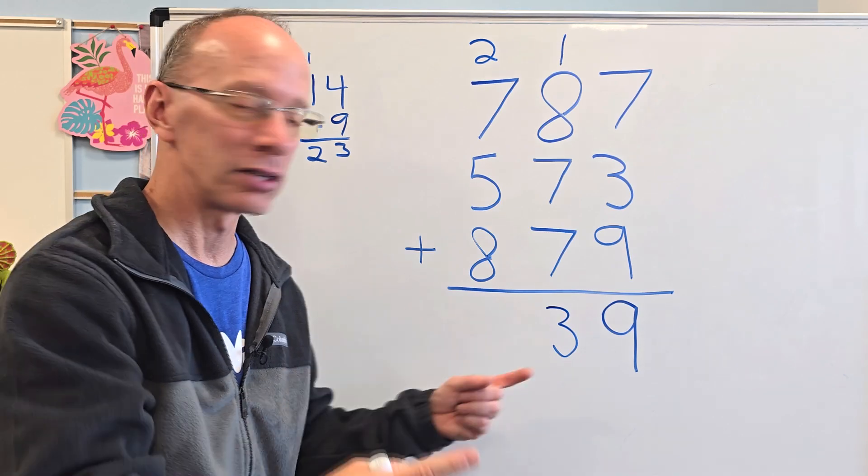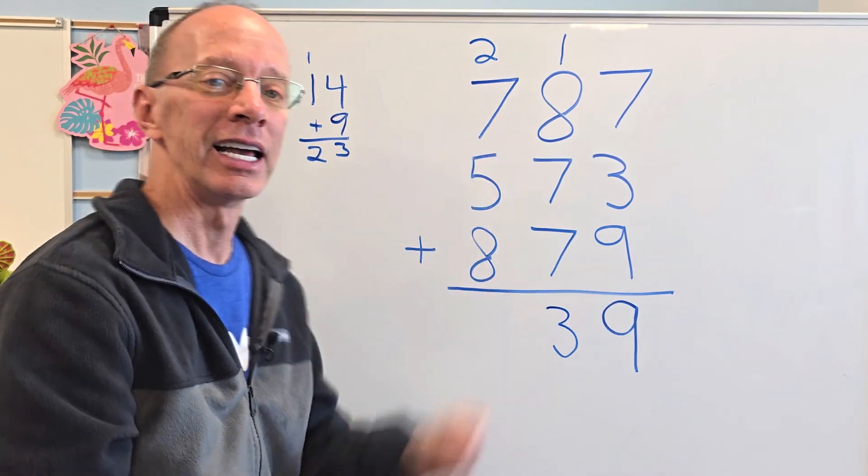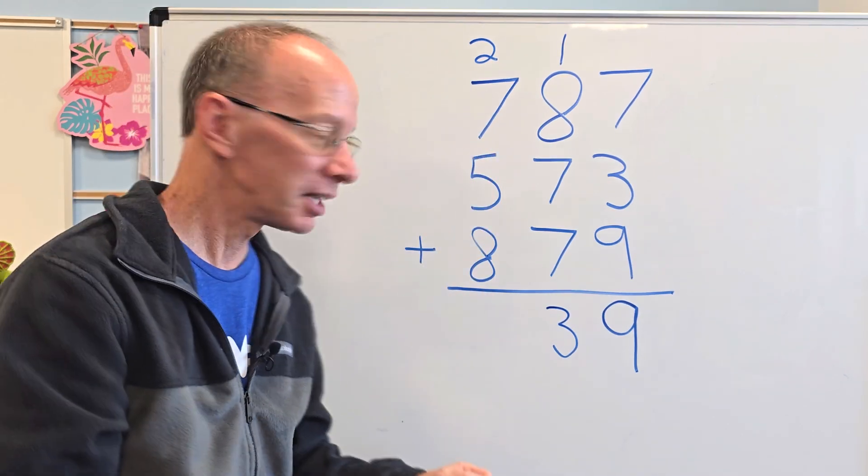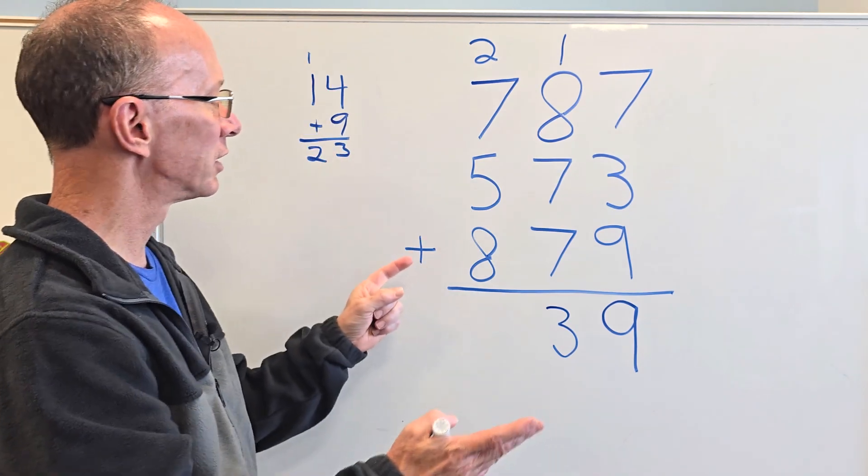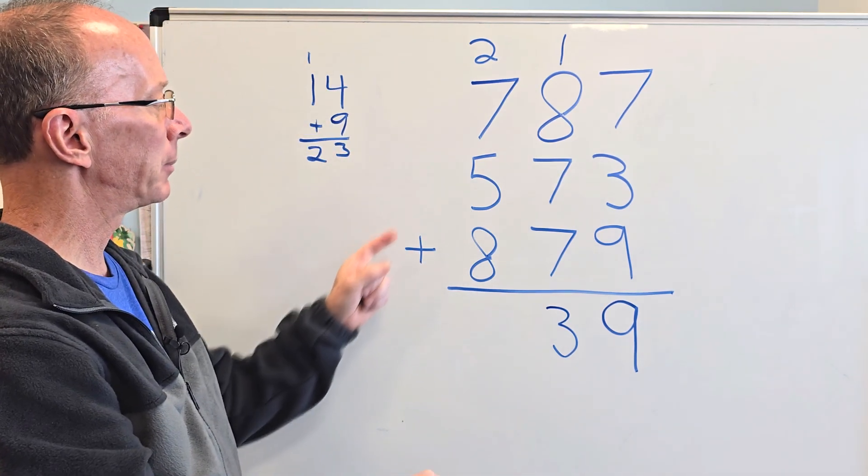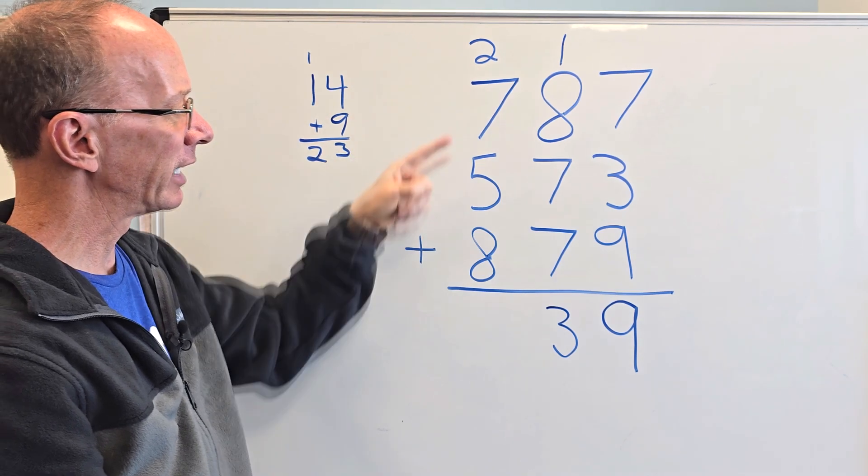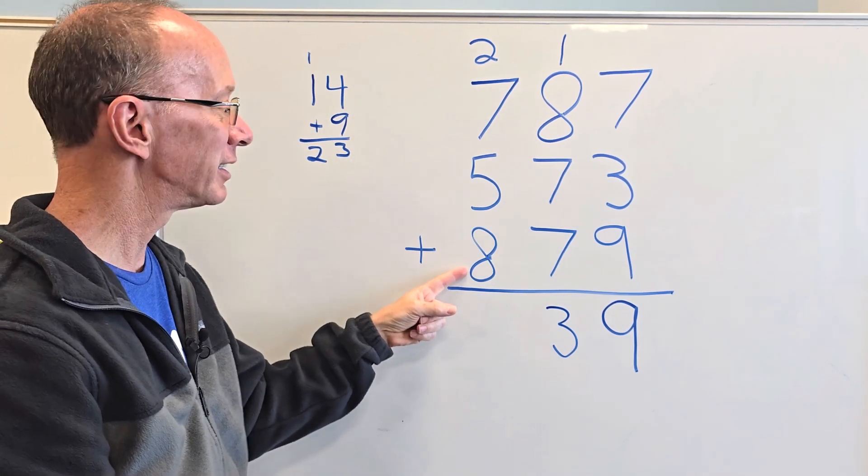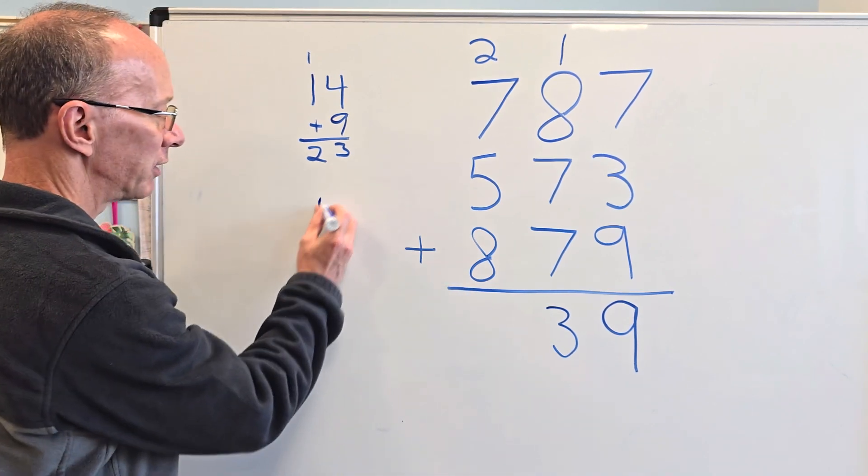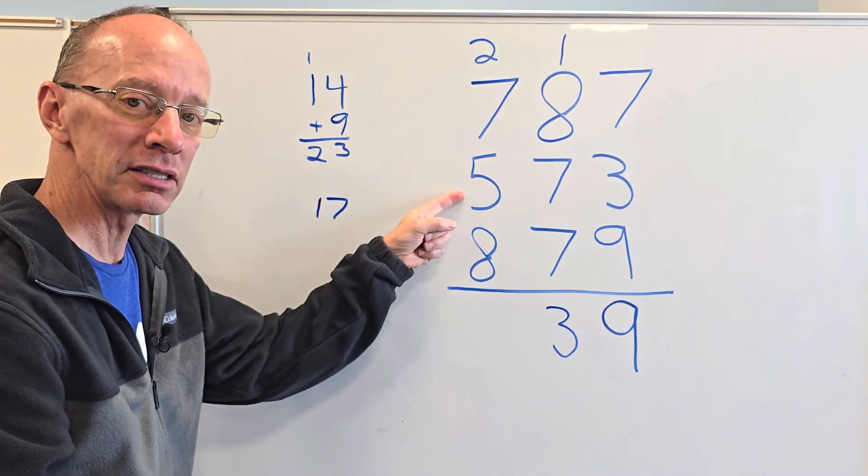And again, I'm just going to start the whole process over and then add the hundreds. So I just look for some easy ones to add right now. We could go with seven plus two would be nine. And then nine plus eight would be 17. I'm going to put 17 right here.